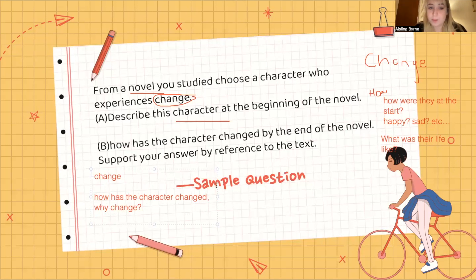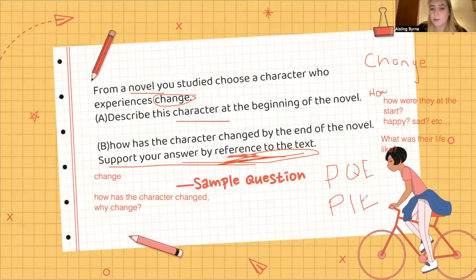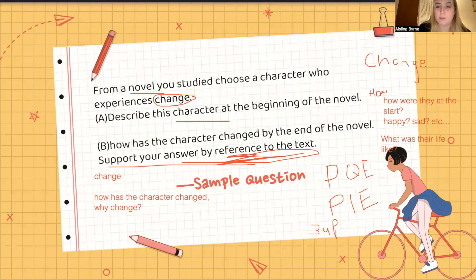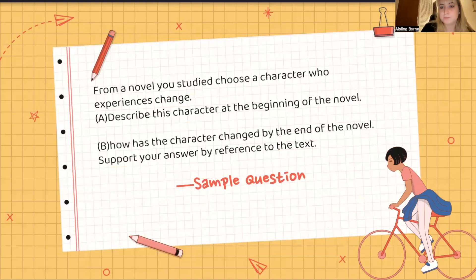Make sure you're supporting your answer with reference to the text — whether using PQE (point, quote, explain), PIE (point, illustrate, explain), or the three-ups method (start up, back up, sum up). These are our ways to weave quotes into our answers. The text I'm using for this question is Of Mice and Men.